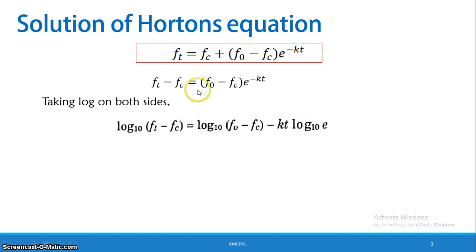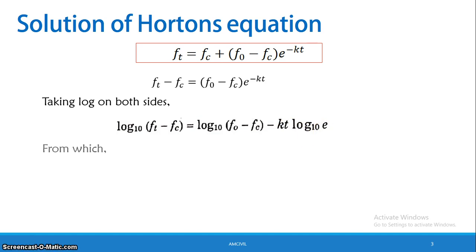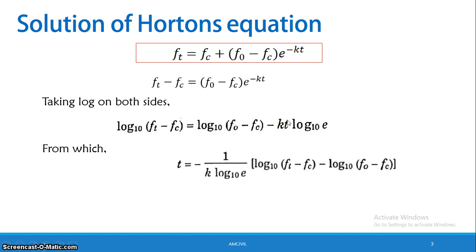Taking the natural logarithm: log(Ft minus Fc) equals log(F0 minus Fc) minus Kt times log(e). At time T equals 0, Ft equals F0, so Ft minus Fc equals F0 minus Fc.